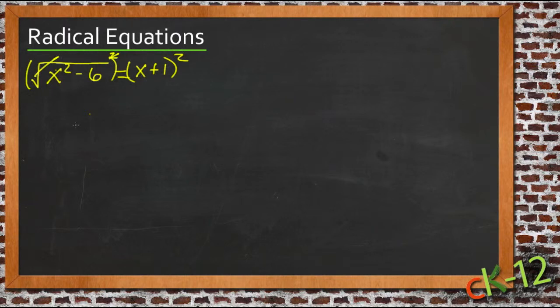Our square will cancel that radical, and we'll get x squared minus 6 equals x plus 1 quantity squared.